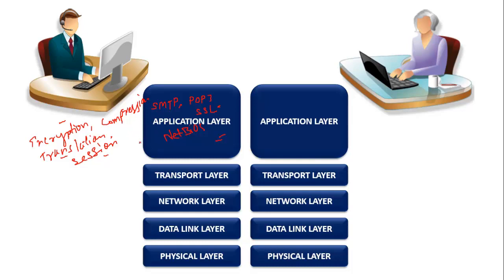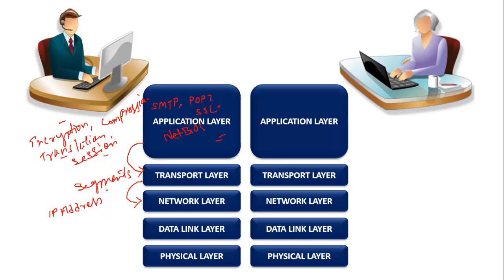Once all tasks at the application layer are completed, data is forwarded to the transport layer, where it gets converted into segments. This layer is responsible for end-to-end data delivery, ensuring data reaches its destination successfully. The segments are then forwarded to the network layer, which adds the source and destination IP address and converts the segments into packets. The packets are forwarded to the data link layer, which adds the source and destination MAC address — the physical address — and converts the packets into frames.